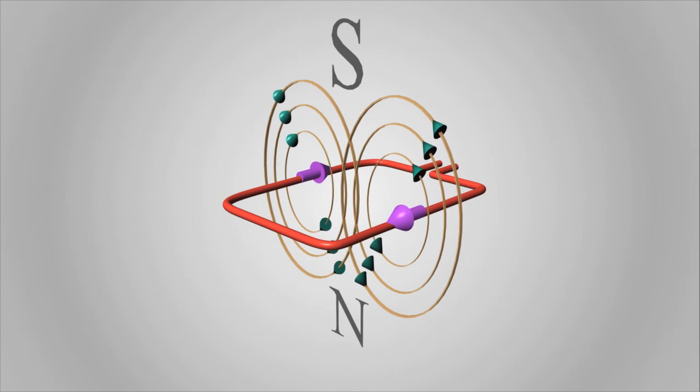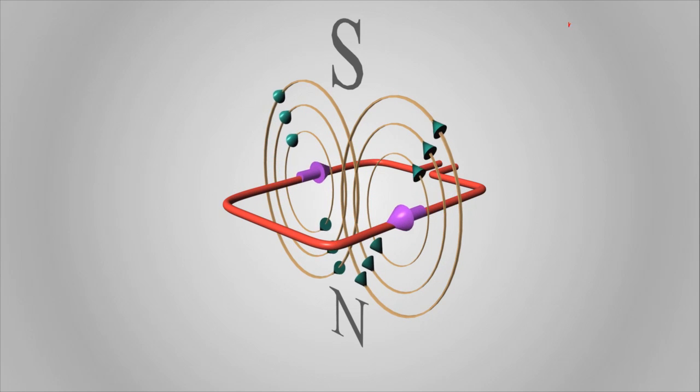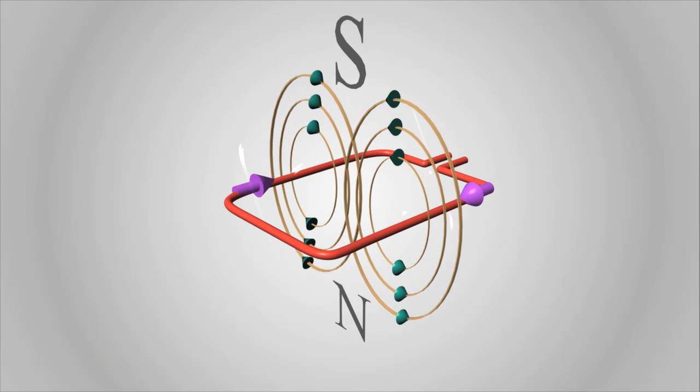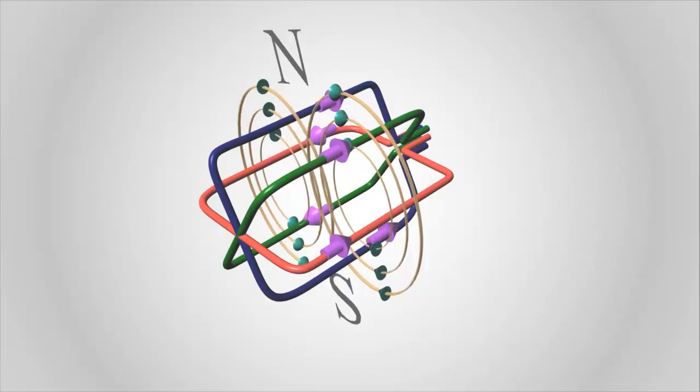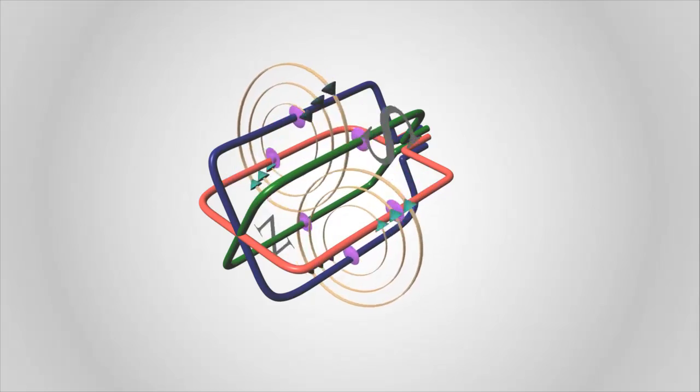When alternating current passes through a coil, it produces a magnetic field like this. Now, the other two windings are placed 120 degrees apart in a spatial arrangement. As a result, they will produce a rotating magnetic field.